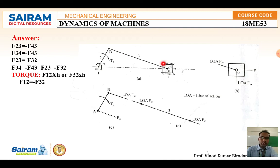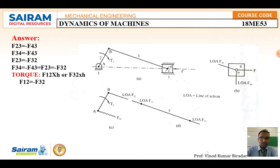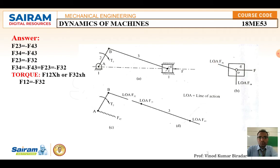Where there is a fixed point, we get a normal reaction perpendicular to it. This is called the line of action F14, meaning element one (the ground) is pushing the piston, element four. F14 is drawn perpendicular to the sliding surface. This completes the free body diagram of the piston element. Now I will draw the free body diagram of element three using formulas.